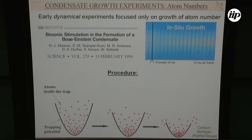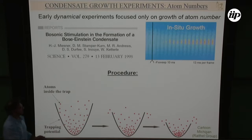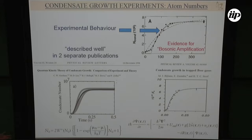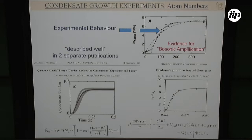In cold atoms, the idea is you have a harmonic trap, hold all the atoms, and gradually lower the height of this wall so atoms are lost and the rest thermalize. You prepare a state above TC, lower quickly — shock evaporative cooling, truncating your distribution — and then see how the condensate forms. In terms of particle number, the data shows slow initial growth because you need to get the seed into the condensate, then stimulated emission takes over.